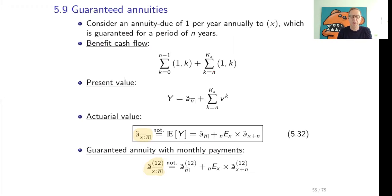So the first n payments are guaranteed or for sure. After the first n payments, so from time n on, the payment depends on survival. What is the present value of this cash flow? The present value is the present value of the first sum, which is the n-year term annuity certain, plus the sum of v to the power k for all k from n onward, weighted by the probability of survival k px.